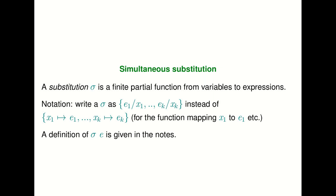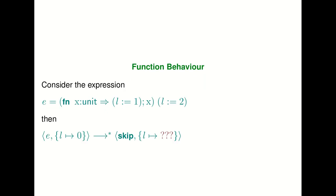We've defined substitution, and what we expect is for arguments to be substituted in for the formal parameters. Because in L2, expressions and statements have no distinction from one another, we can place expressions in the position of a formal parameter. This immediately raises some issues of how to implement it. If you look at this expression — Fn x colon unit goes to L gets set to one, semicolon x — and you give it the argument L gets assigned to two, the question is: what does this mean?